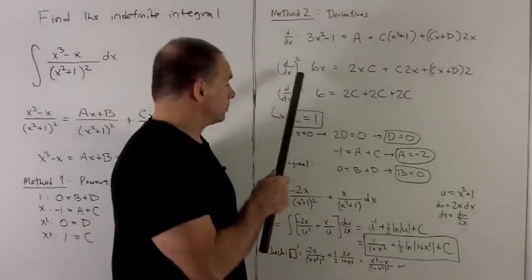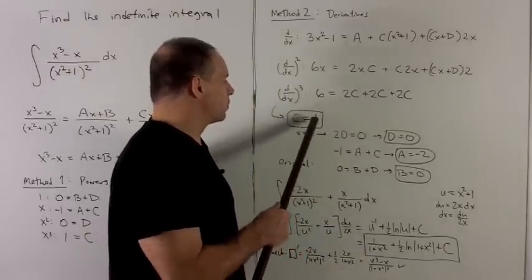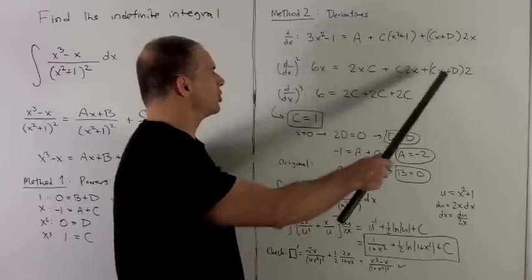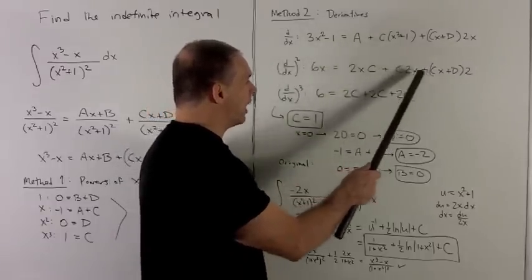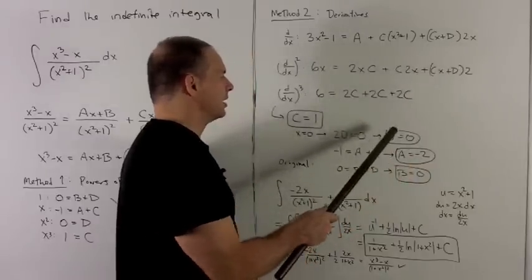All right, let's noodle around with this. So we have c equals 1. If I put x equal to 0 in this equation, notice that everything's going to go away except for the 2d. So I have 0 equals 2d. So we get d equals 0.